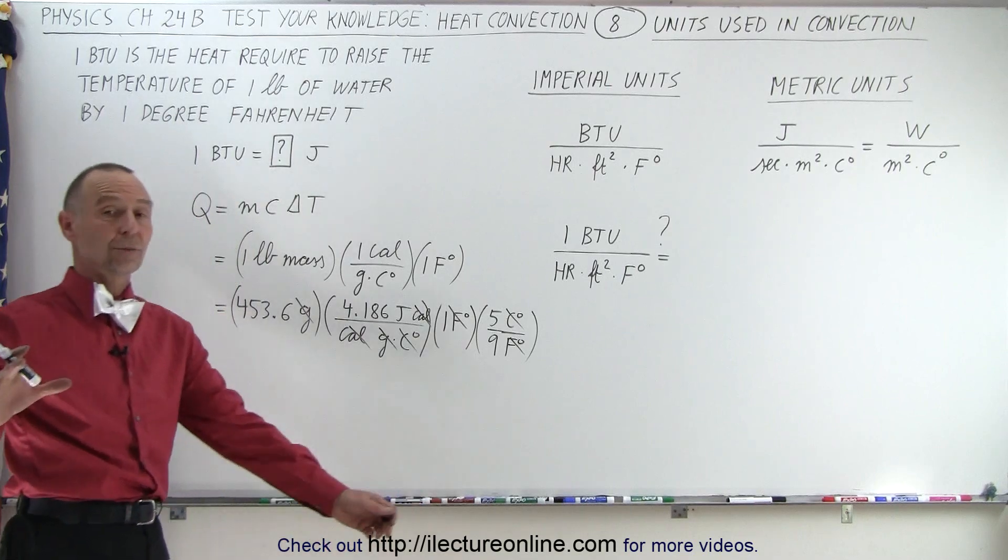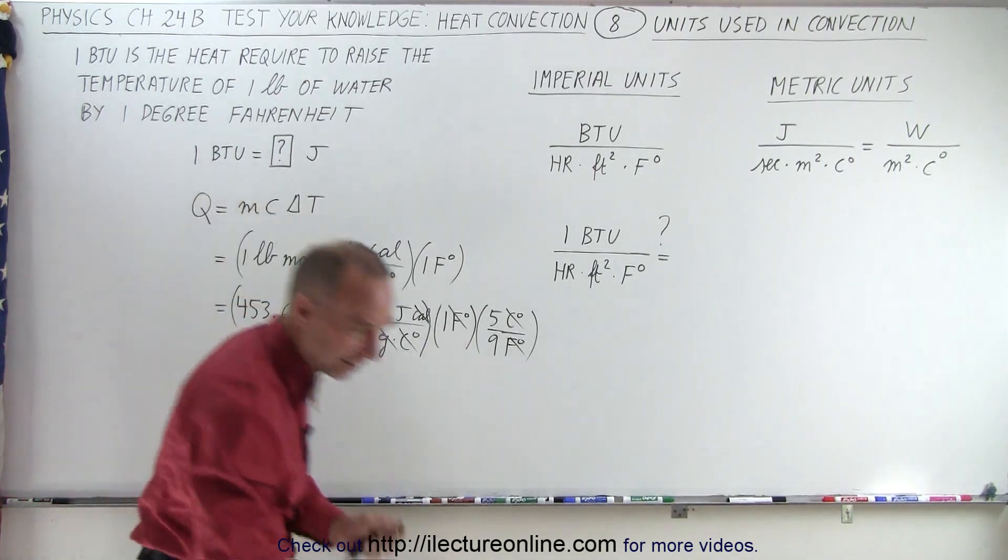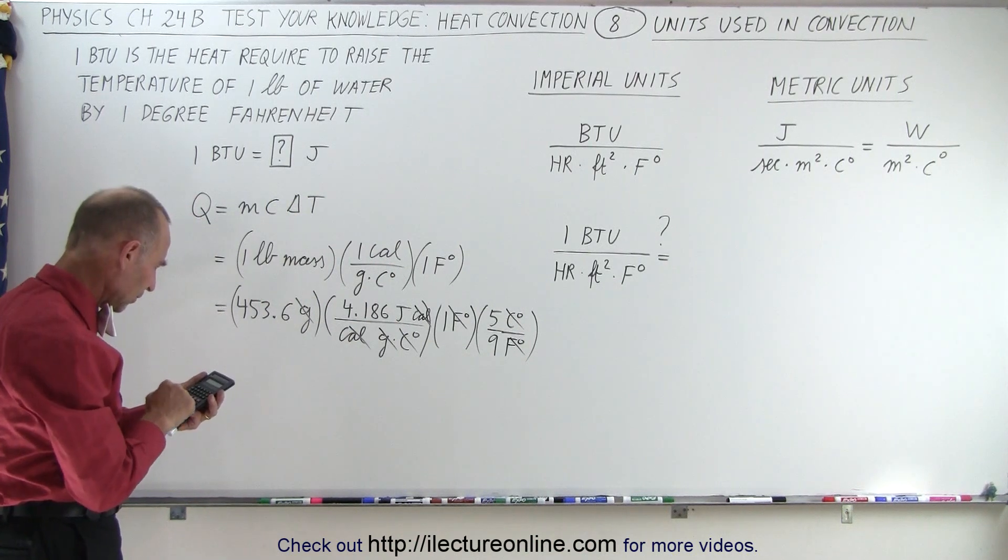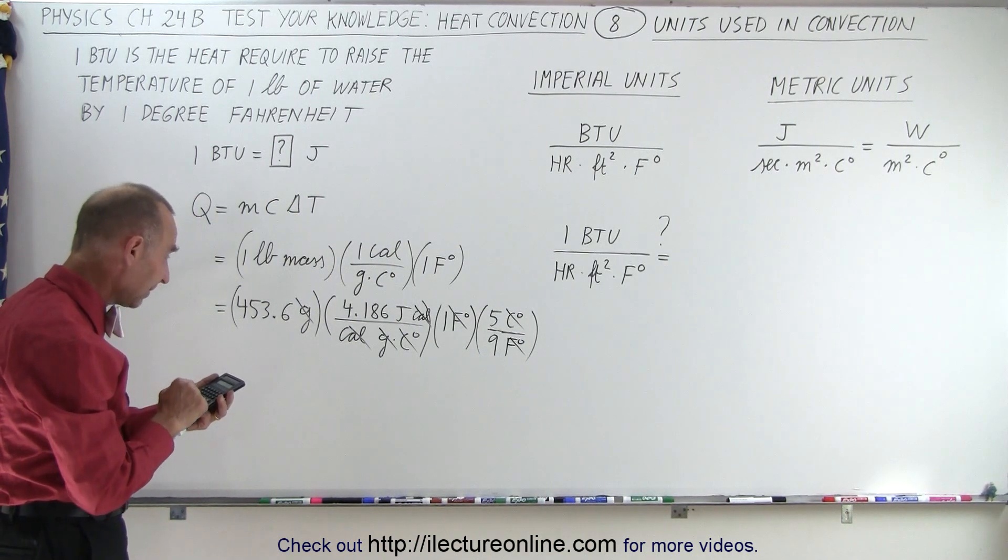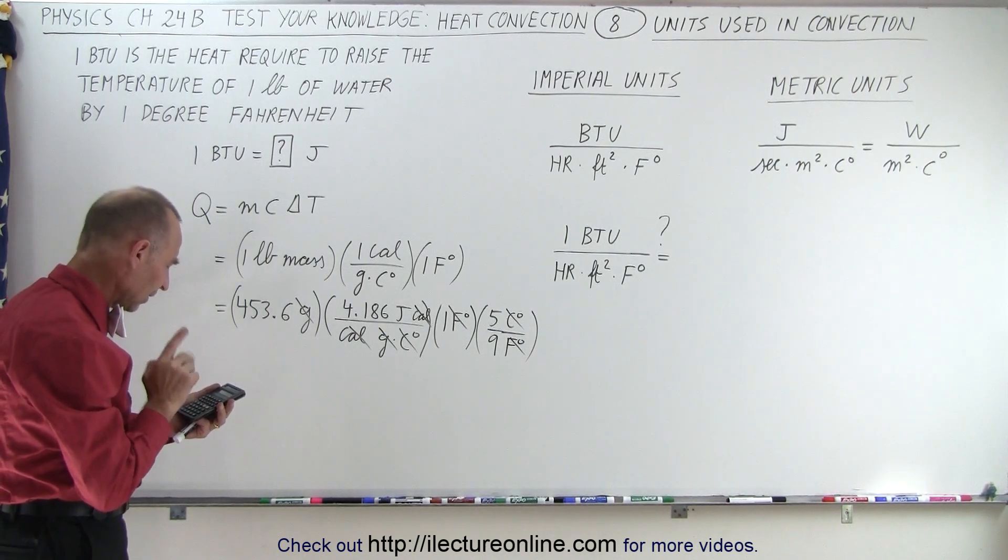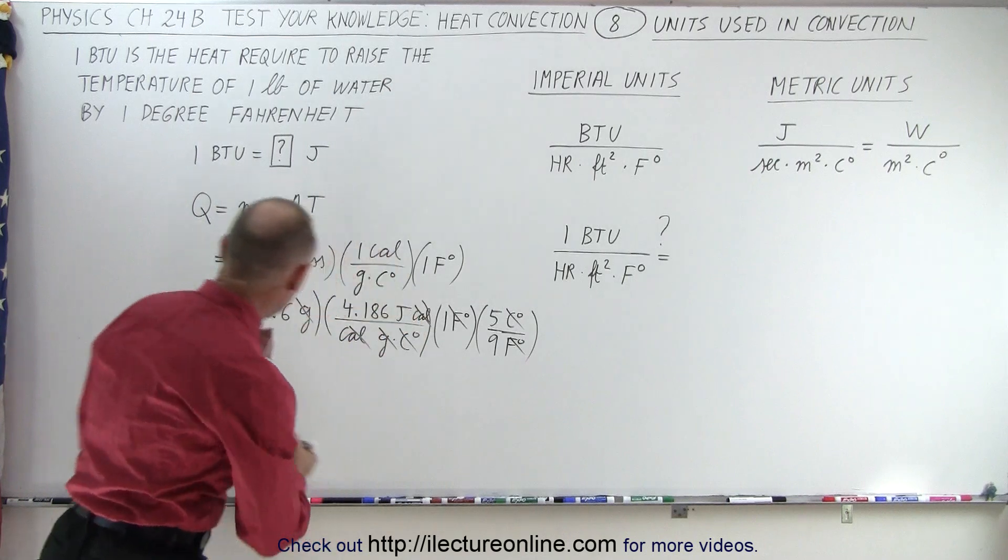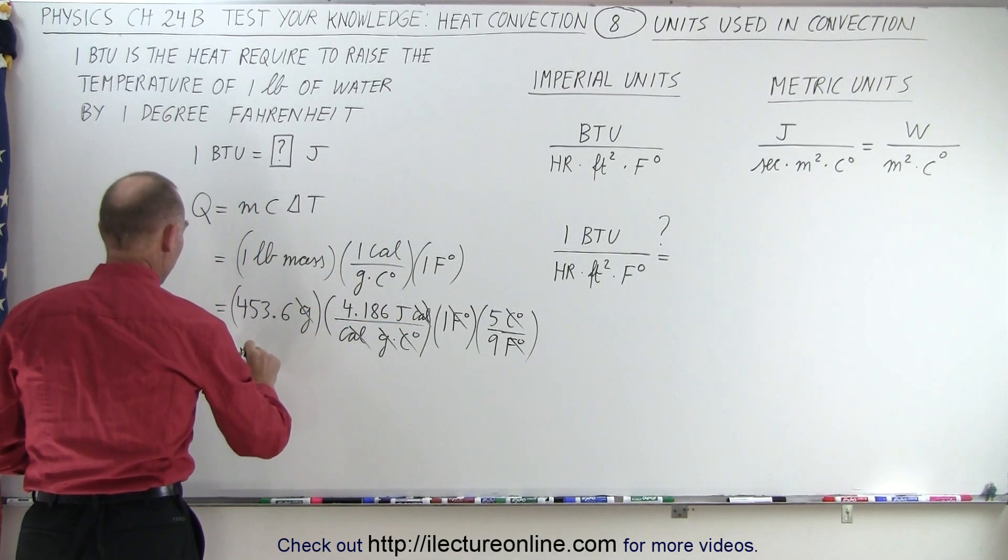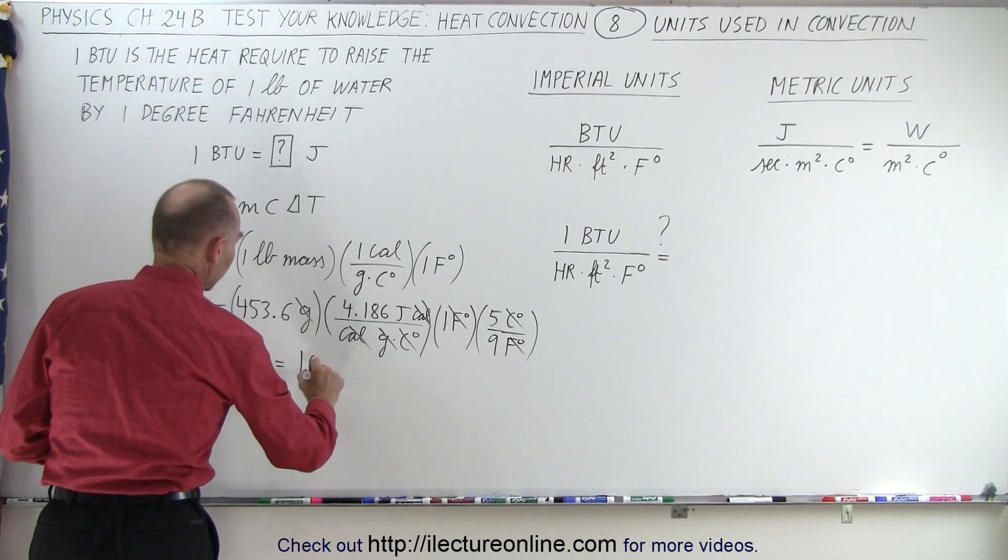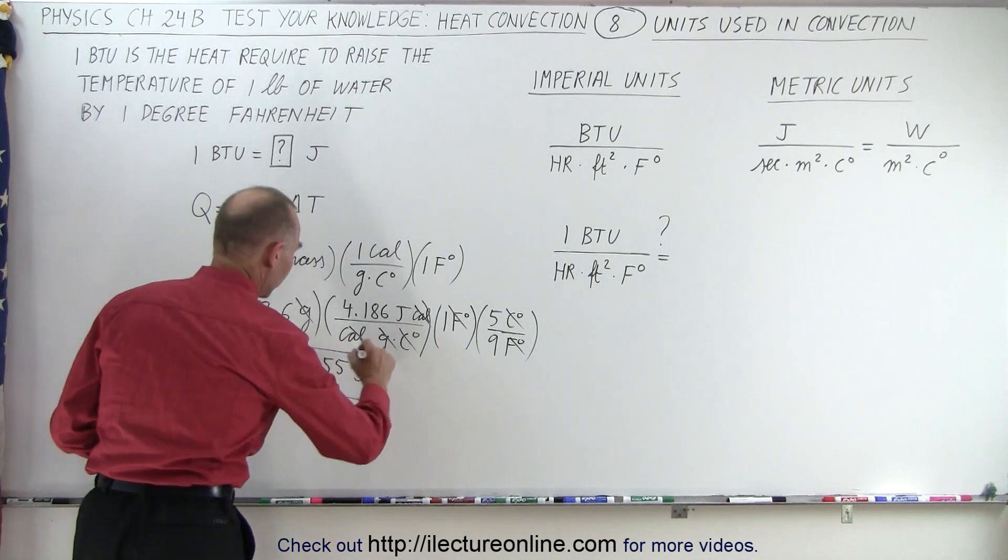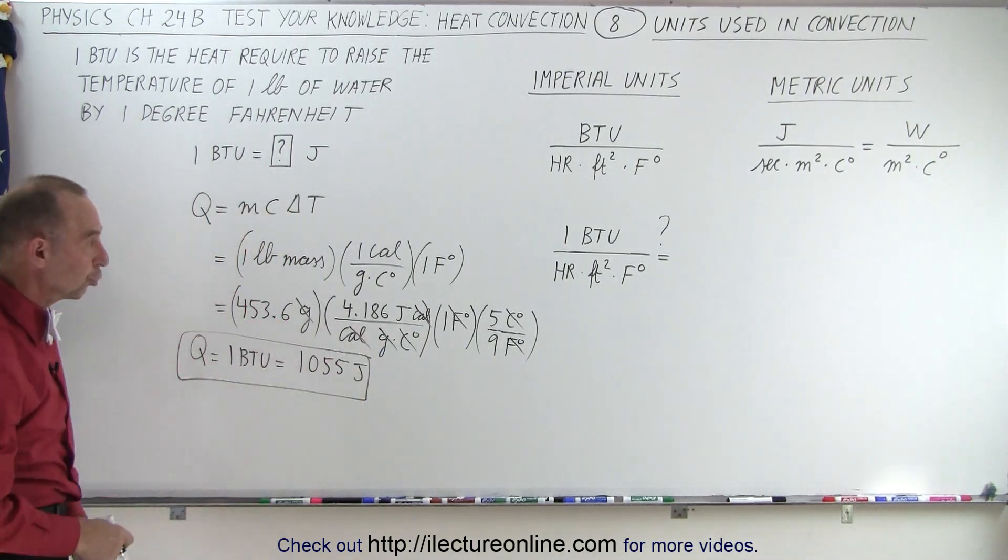Yes, the end result will be in joules. Now we need a calculator. So we have 453.6 times 4.186 times 5 divided by 9 equals 1055. So Q equals 1 BTU equals 1055 joules. So that's the conversion from a BTU to a joule.